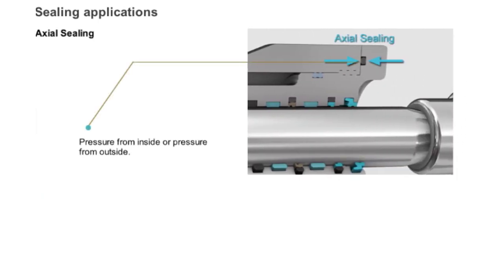If the O-ring is used as an axial seal, the sealing surfaces are at the top and bottom of the O-ring. The O-ring seals in axial direction in flanges and cover plates.